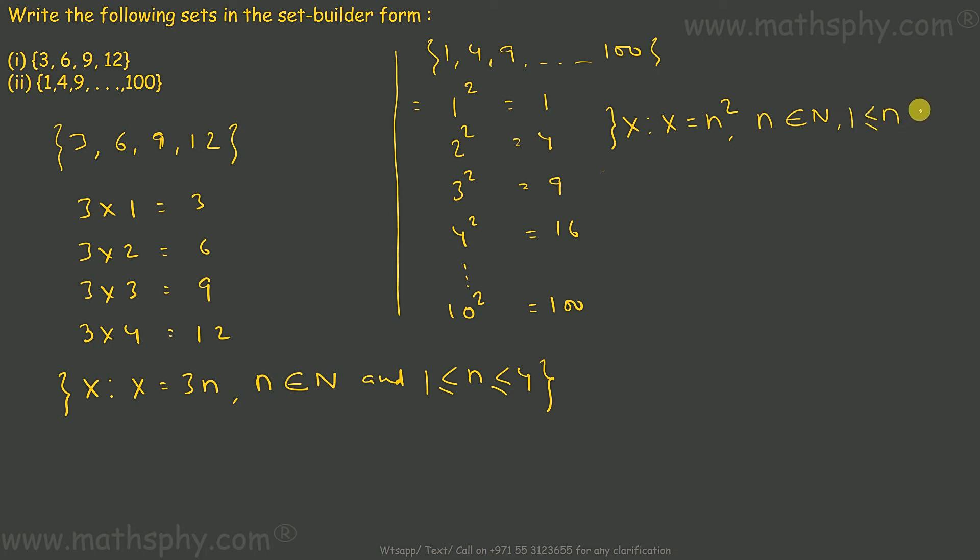X is n square. 1, 2, 3, 4, 5, 6 till 10, I take them as n. Square of them will be giving you these elements, all these numbers.